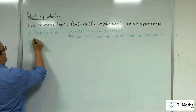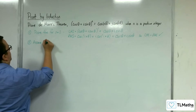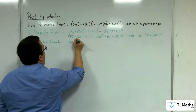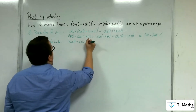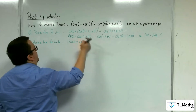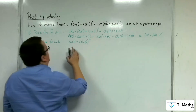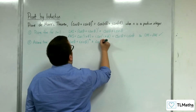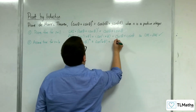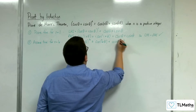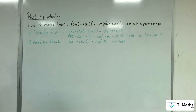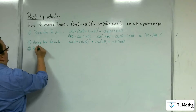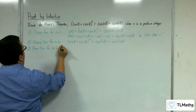Step 2: assume true for n = k. So, (cos θ + i sin θ)^k is equivalent to cos(kθ) + i sin(kθ). Now, we need to prove that it's true for n = k + 1.